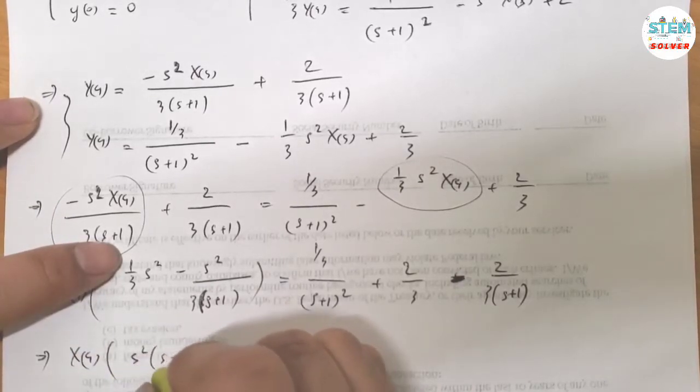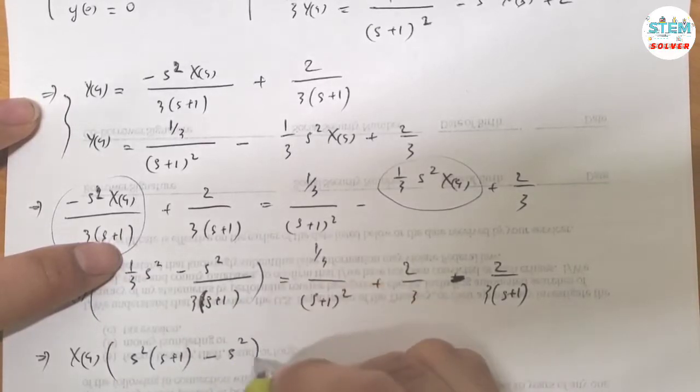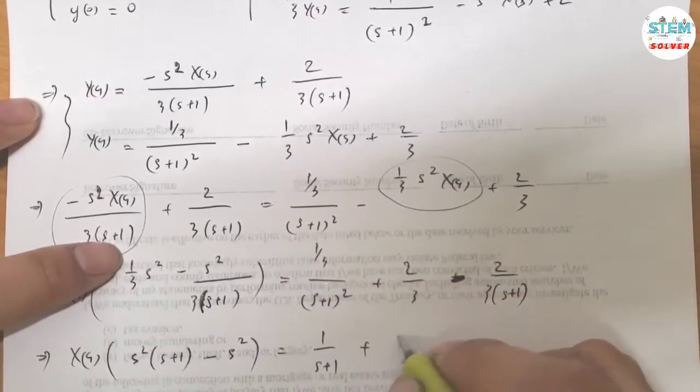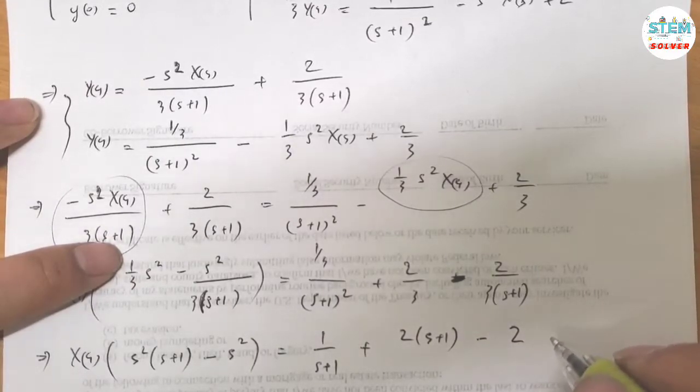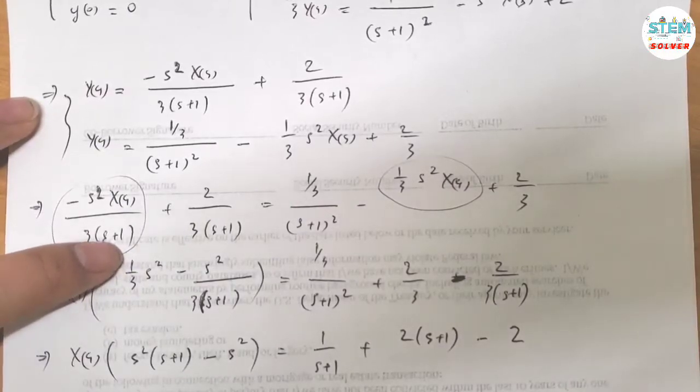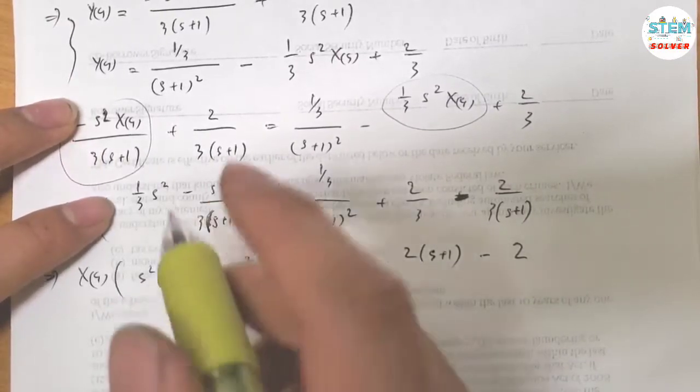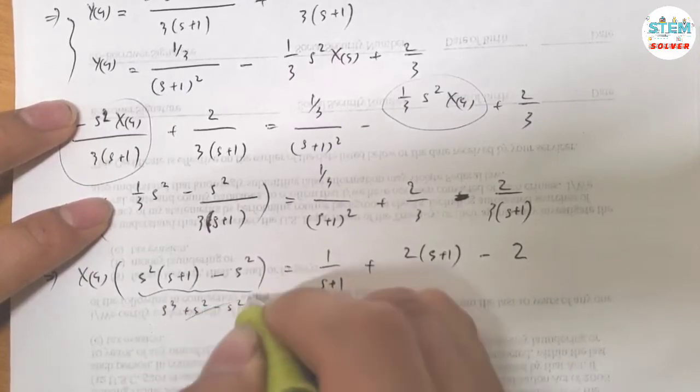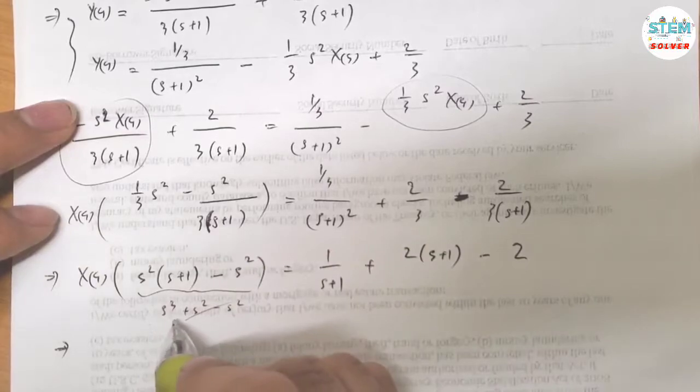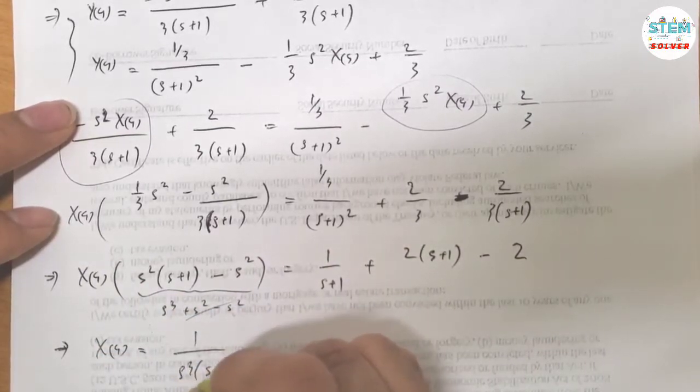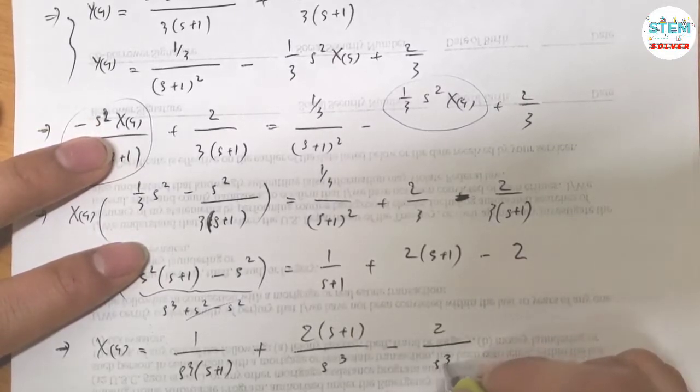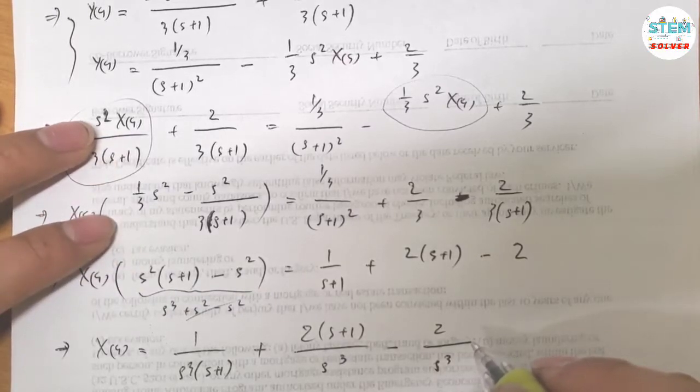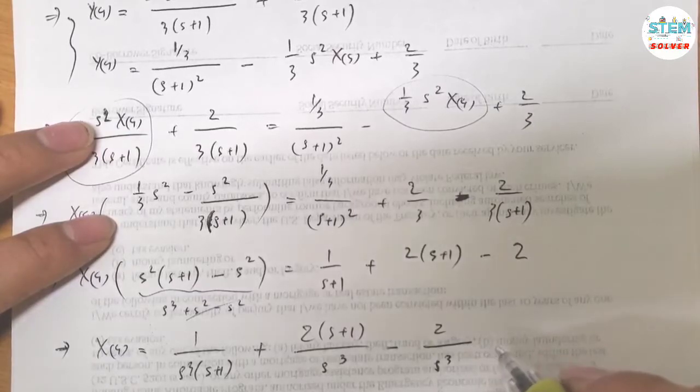I have S squared times S plus 1 minus S squared equals 1 over S plus 1 plus 2 S plus 1 minus 2. Let's see if I do it correctly. I think so. So multiply this out. I have S cubed plus S squared minus S squared, this is gone. Left with S cubed. Divide both sides by S squared.